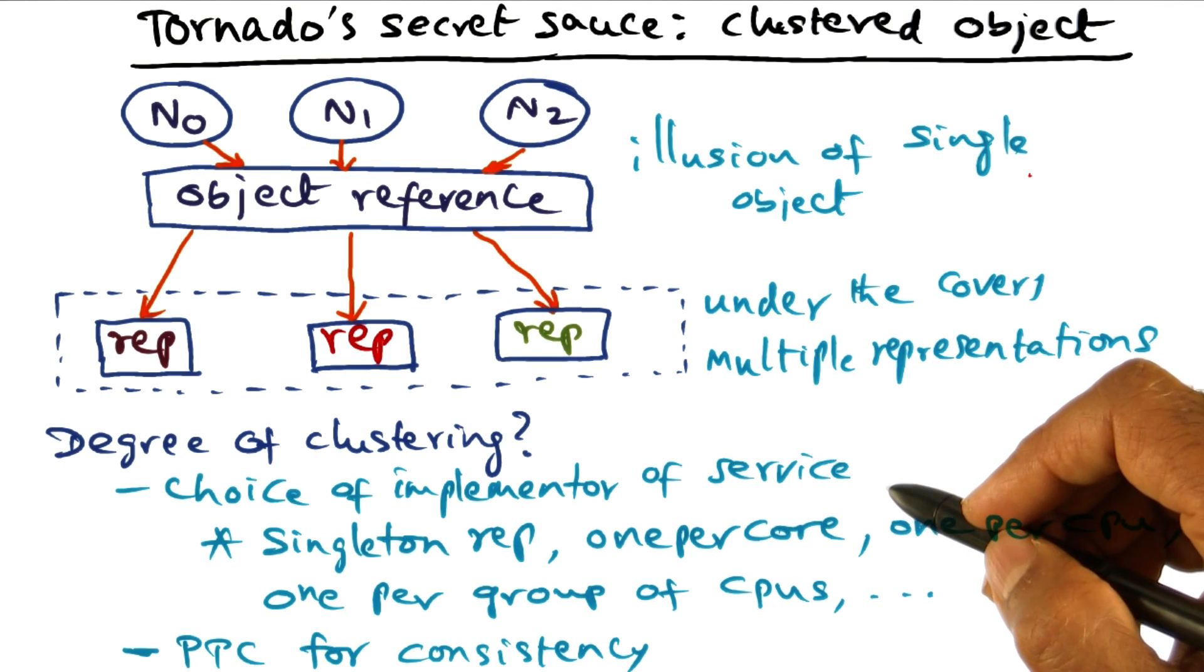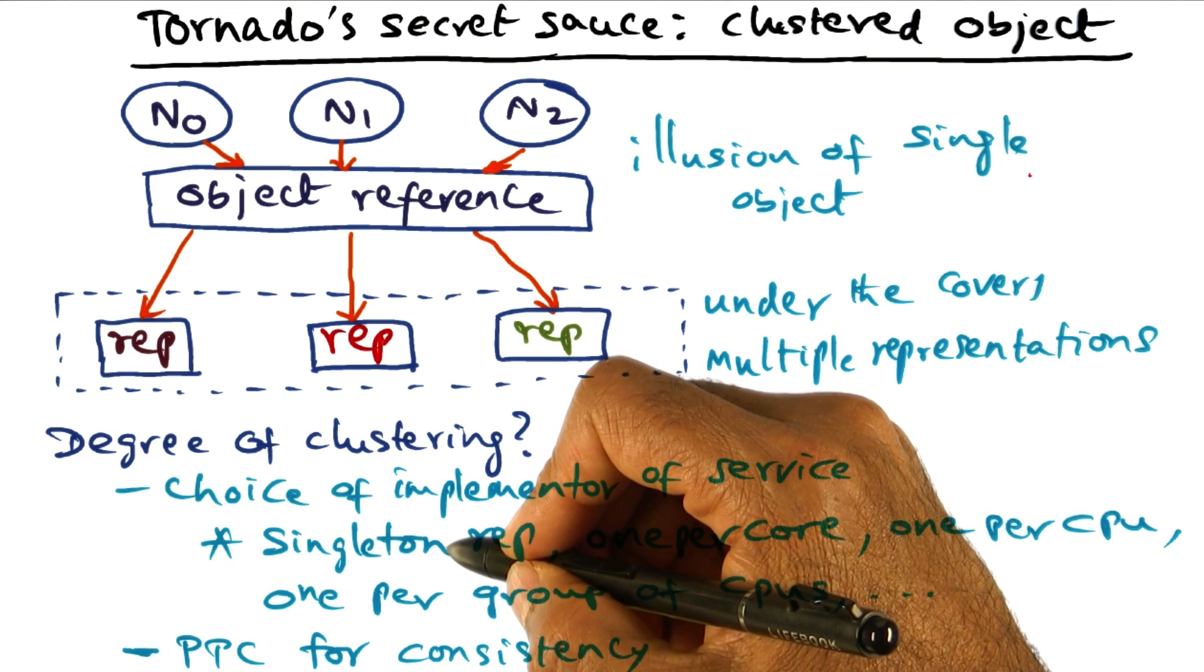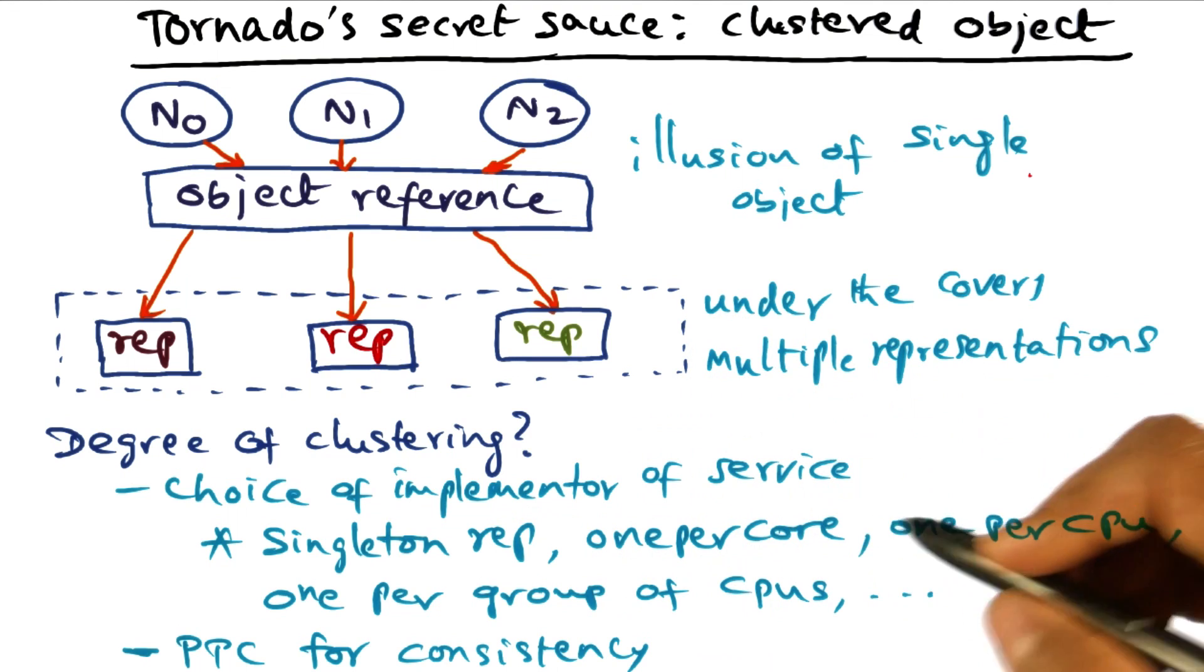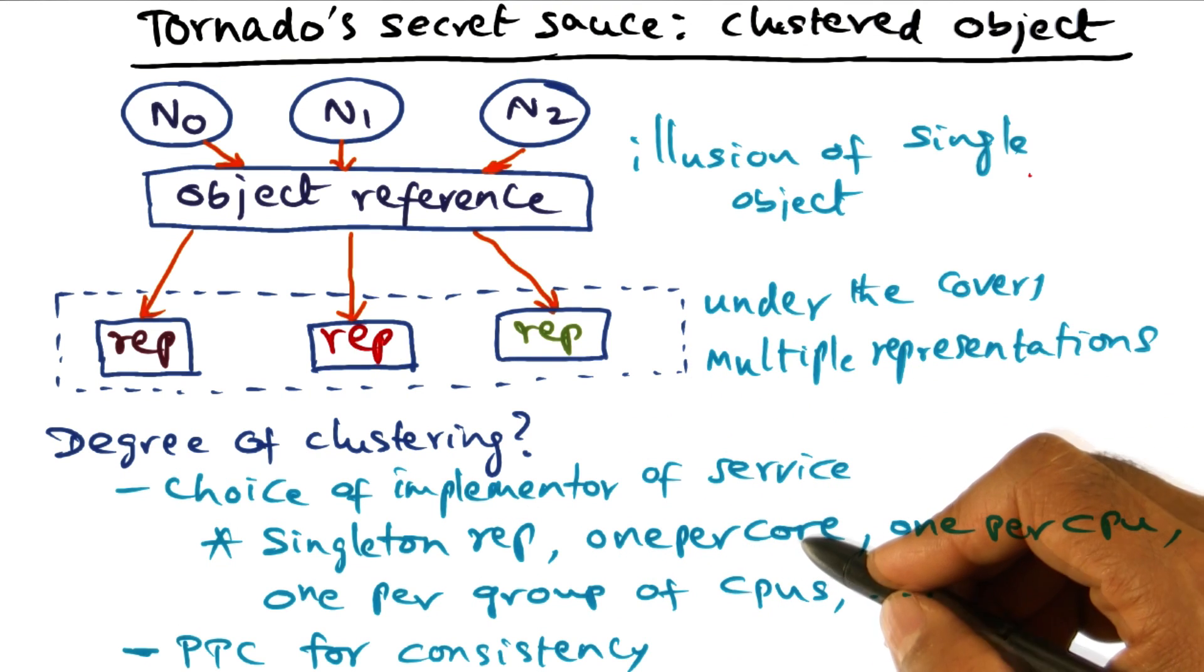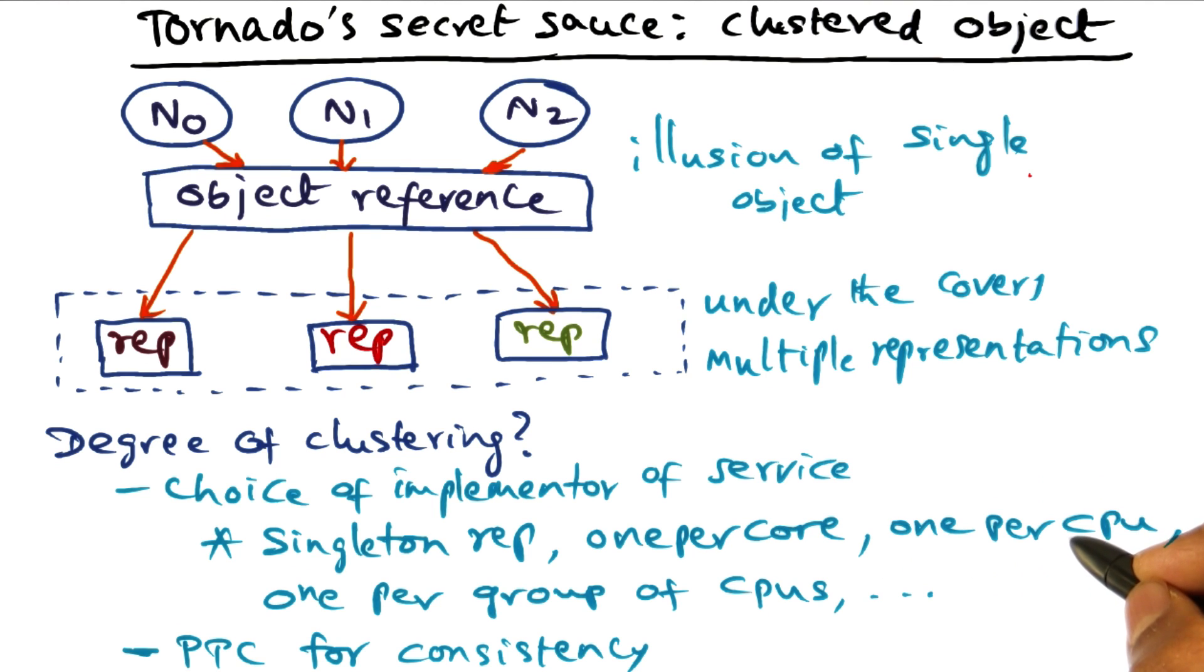So as the designer of the service, you make a decision whether a particular object is going to have a singleton representation, or it is going to be one per core in the entire machine, or one per CPU, meaning it is shared by all the cores that may be there on a single CPU.